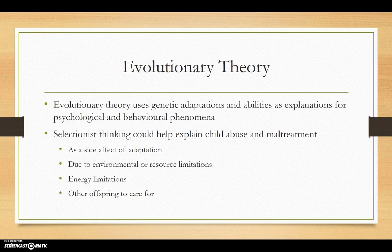Evolutionary theory uses genetic adaptations and abilities as explanations for psychological and behavioural phenomena. This theory could help explain filicide as a side effect of adaptation or due to environmental energy or resource limitations.